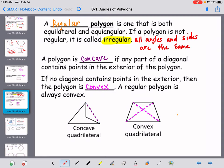If it is not the same, it would be irregular. Irregular is they're different sizes. All angles and sides are the same for regular.